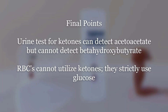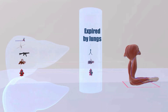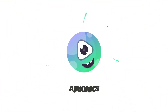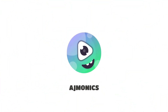A few more things to mention: urine tests for ketones can detect acetoacetate but cannot detect beta-hydroxybutyrate. Another thing to note is that red blood cells cannot utilize ketones — they strictly use glucose. That covers this scene on ketone bodies.